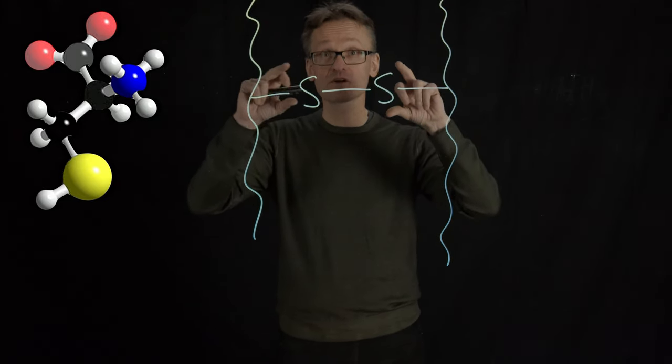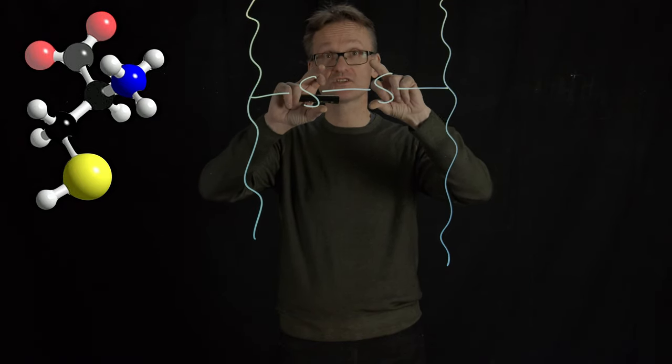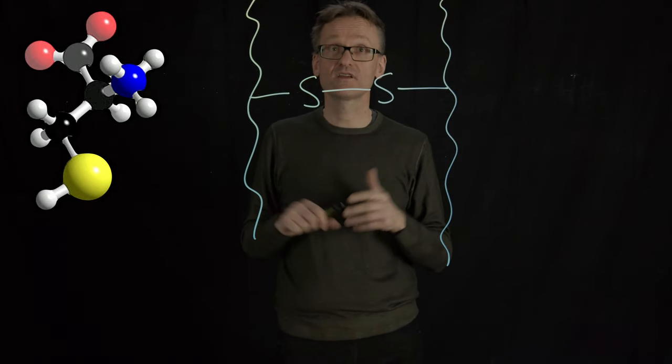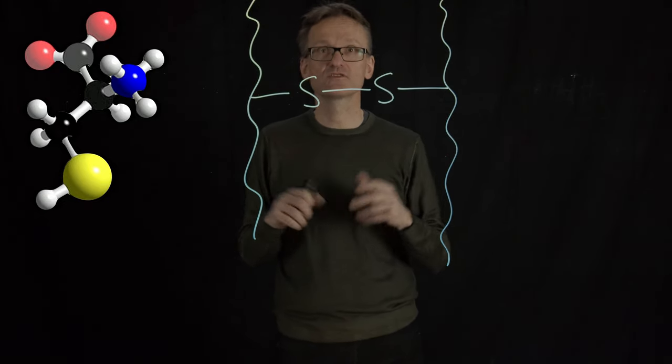But under normal conditions if I have two cysteines very close to each other, this type of bond typically will form if they are within a few, well, eight angstroms or so, the sulfurs.